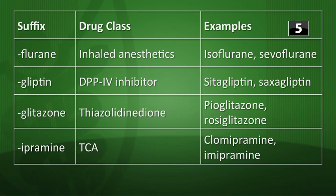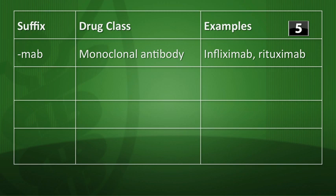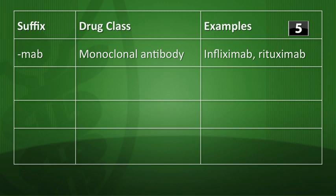The suffix -ipramine refers to tricyclic antidepressants like clomipramine or imipramine. The suffix -mab is an acronym for monoclonal antibodies — whenever you see -mab at the end of a drug name, it's a monoclonal antibody. Examples include infliximab and rituximab.